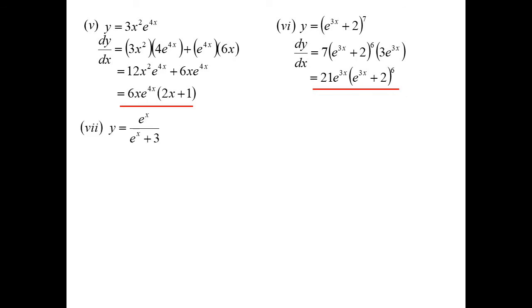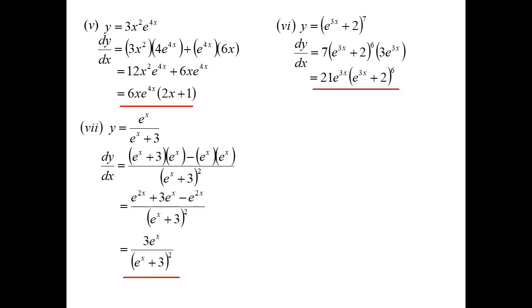Quotient rule. Square the bottom, write down the bottom, diff the top, minus, write down the top, diff the bottom. Be very, very careful. It's so easy to make a silly mistake. e to the power of x times e to the power of x is, of course, e to the 2x.